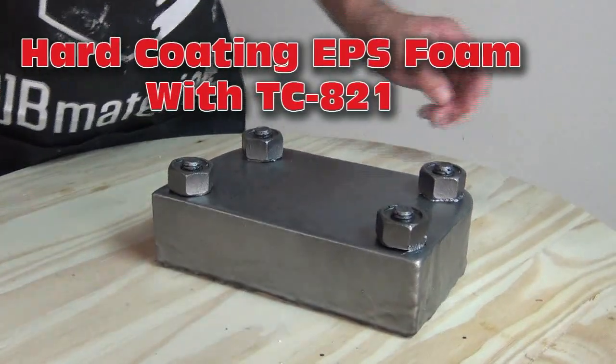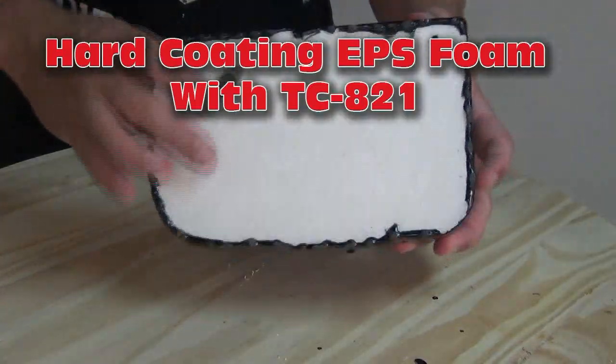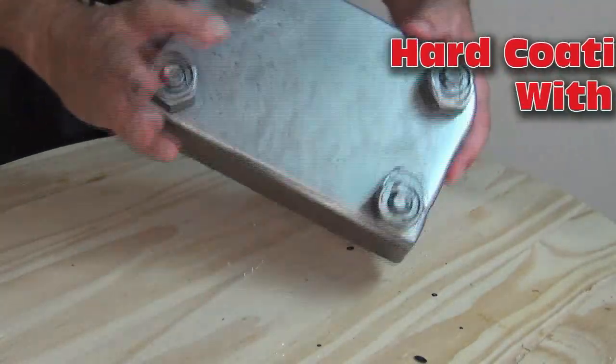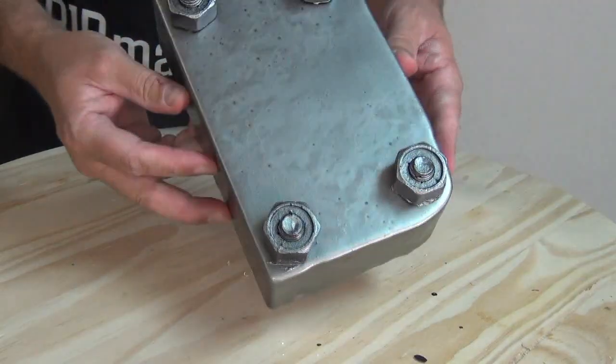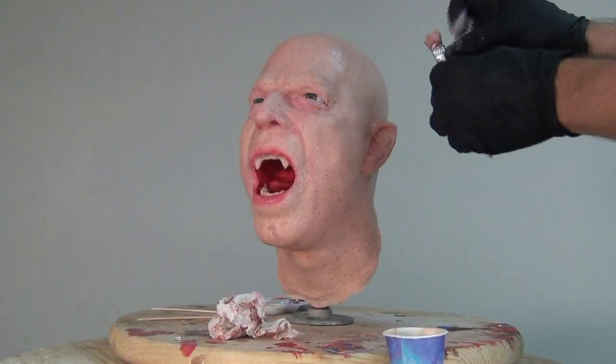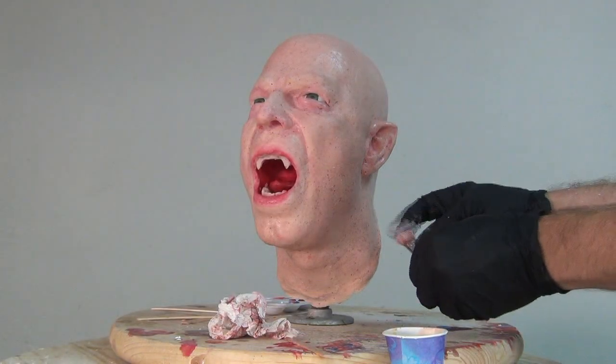Coating Styrofoam or EPS foam with TC821 polyurethane resin. This video is the product of some tests I was doing in my shop, coating Styrofoam with resin. This is something I know many of you out there do, and this is the project that I mentioned in the video I posted last week about the translucent vampire bust.